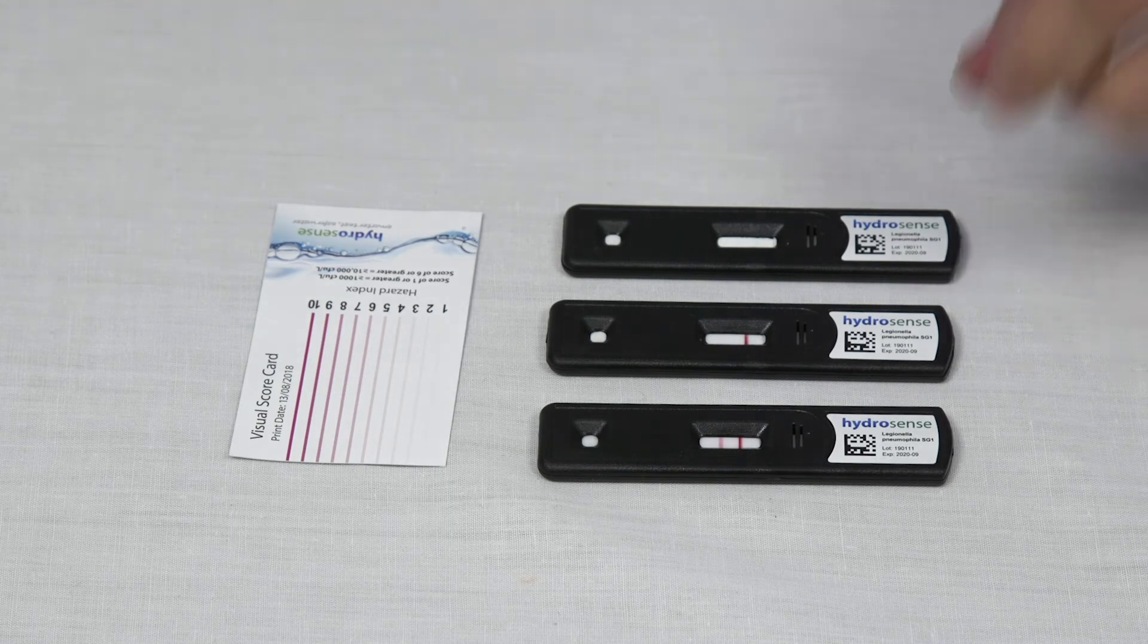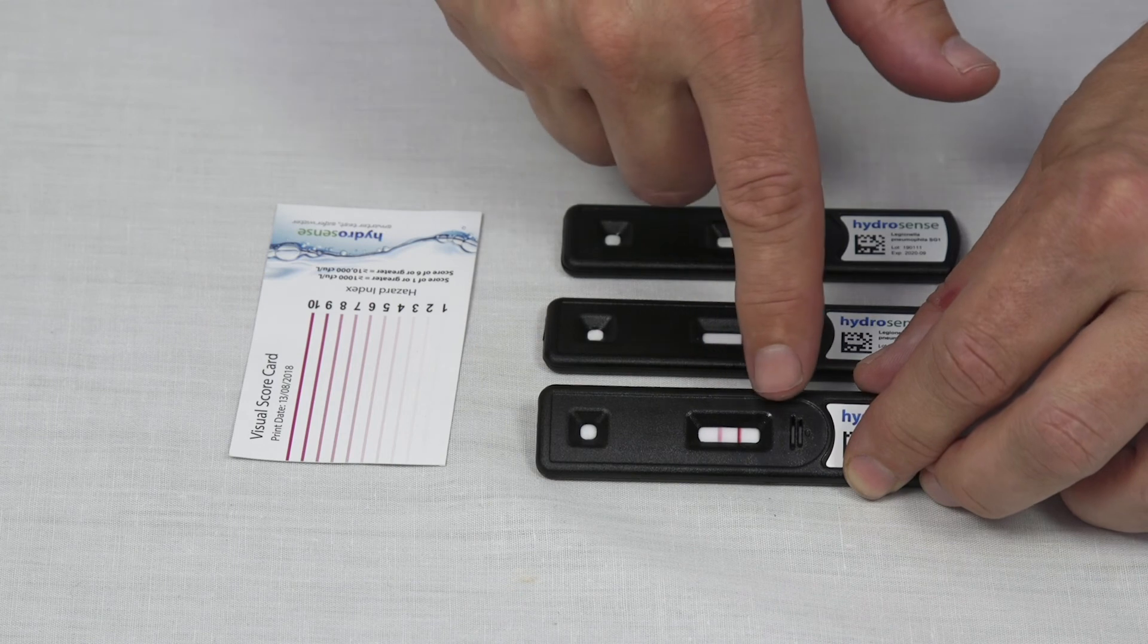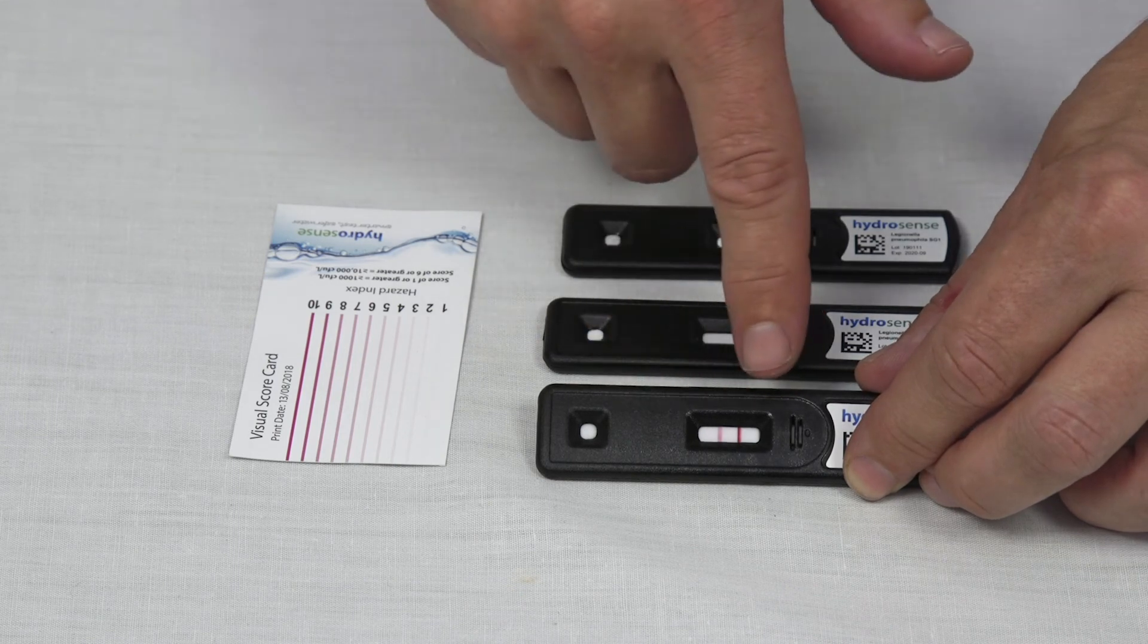The test consists of two lines: a test line and a control line. If both lines are present, then the test is positive.